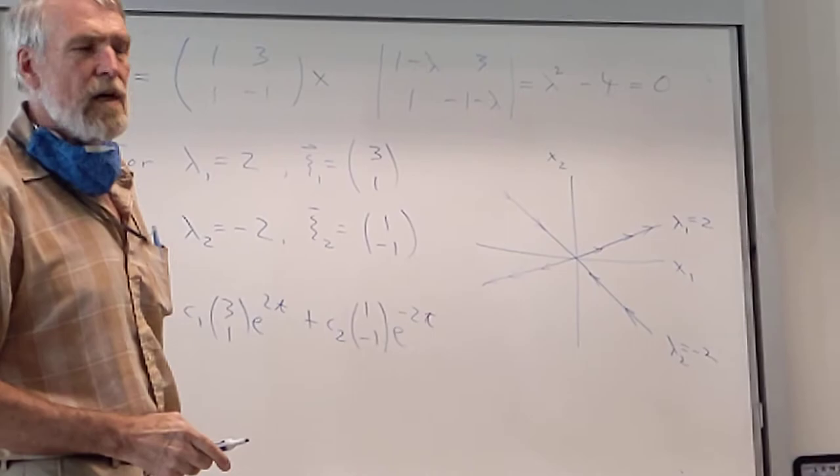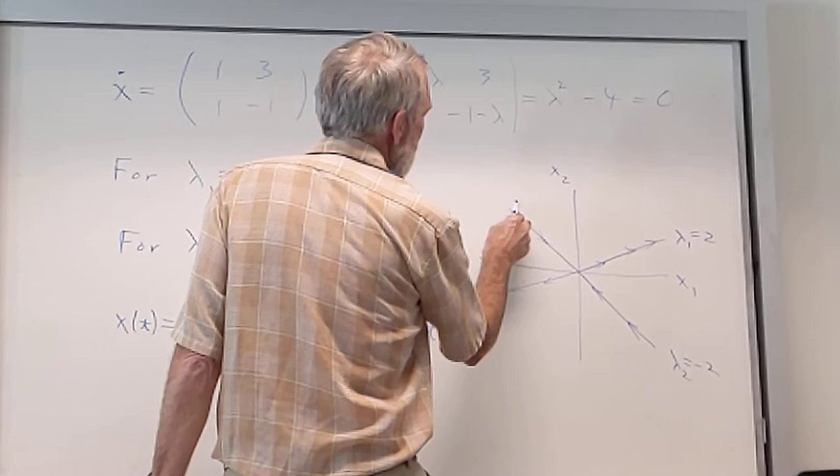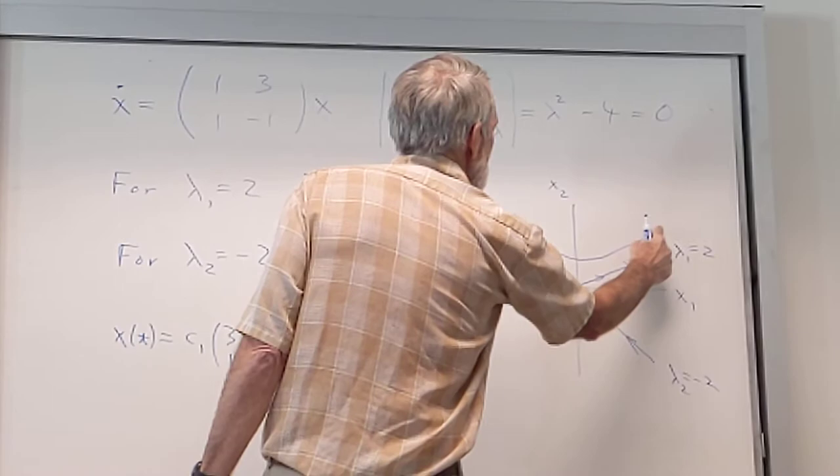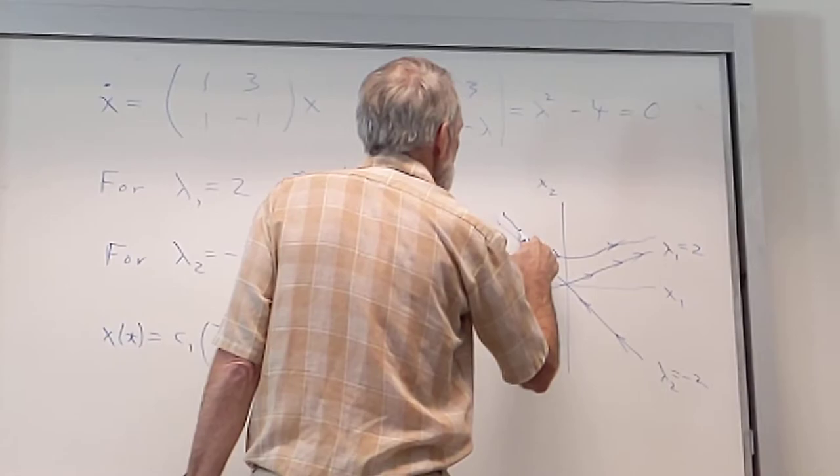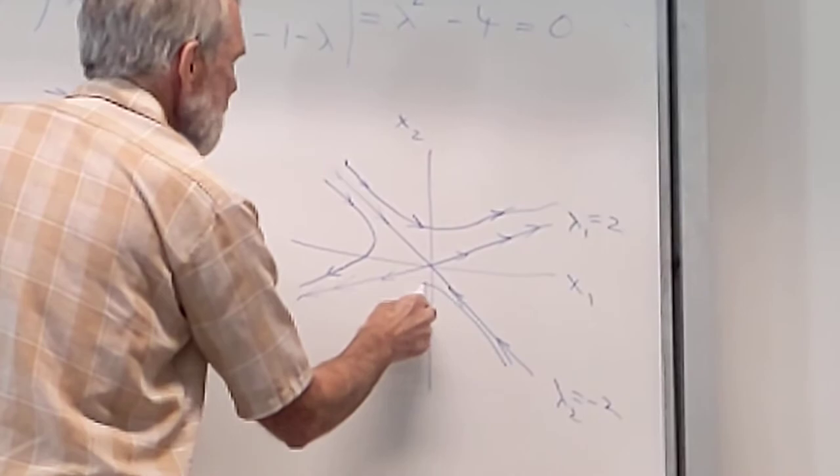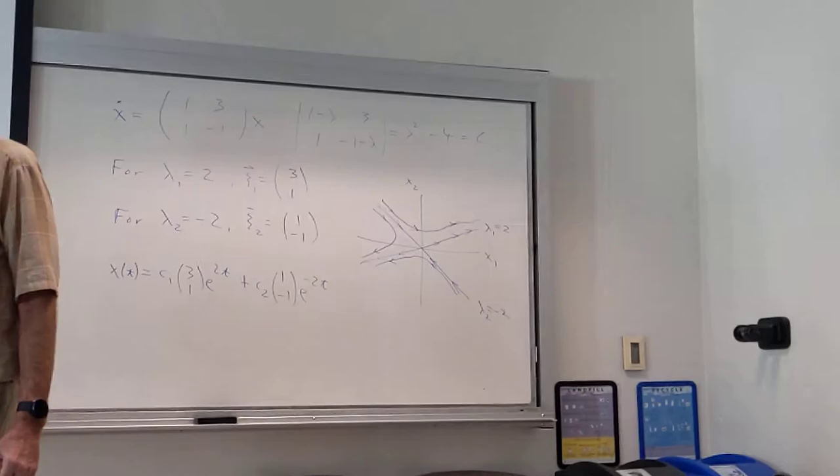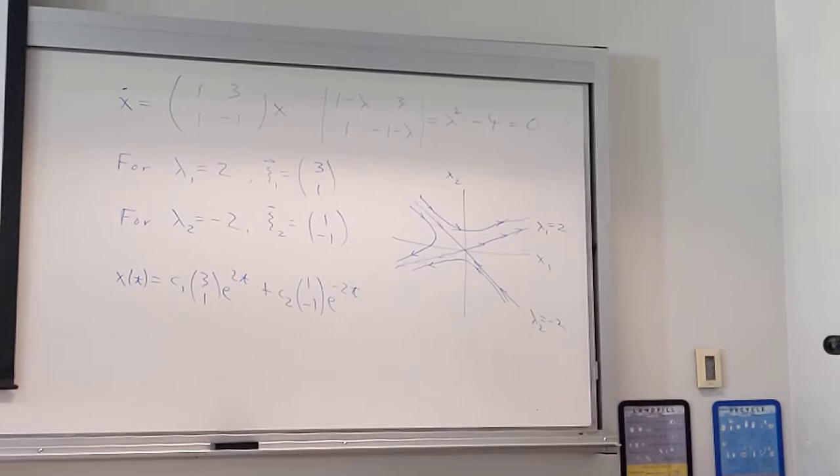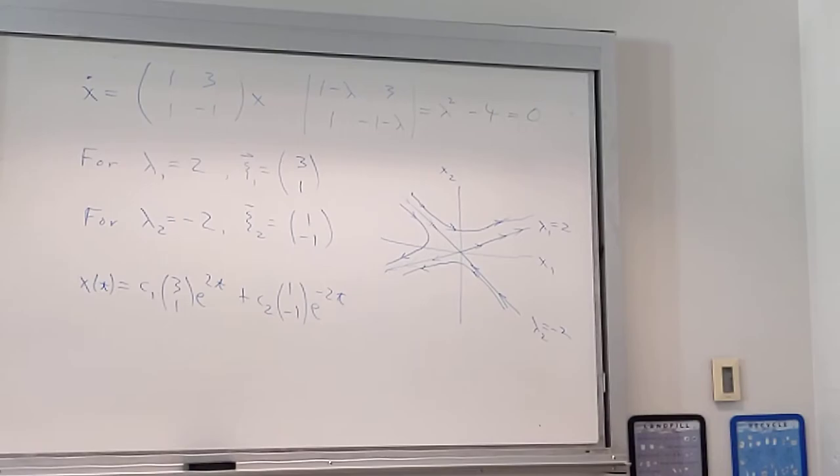So if I were to start at a point, let's just say I started at a point near here, it's going to start by decaying in this direction, but then growing in this direction. I'll just go parallel to this eventually. If I go here, it's going to decay in this direction, then growing in this direction. So is it always going to end up parallel with the stronger? Yes.